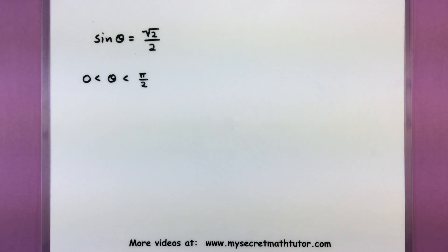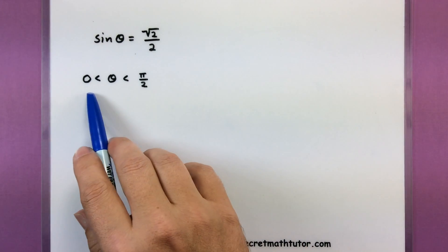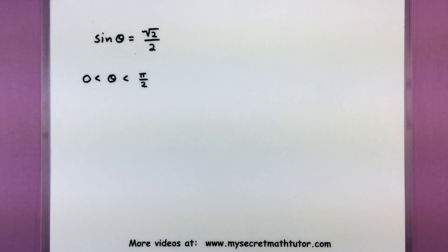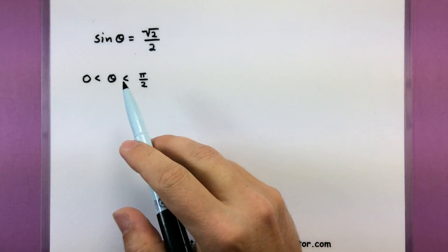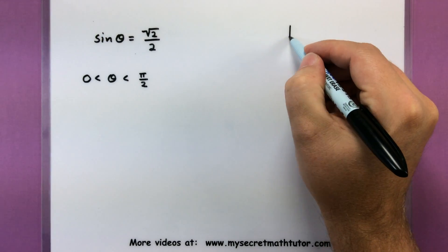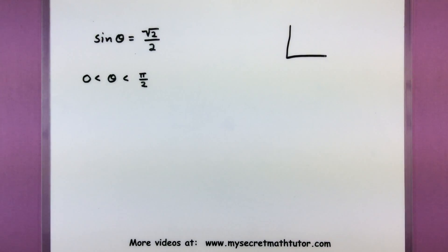For this one I'm curious what the angle is. It lives between 0 and π over 2. I know that the sine of that angle is square root of 2 over 2. To solve something like this it's probably a good idea to just sketch out where that angle lives. So this one is in the first quadrant. So you can imagine just looking at that first quadrant.